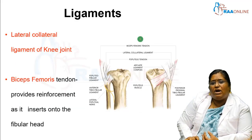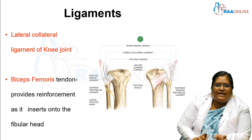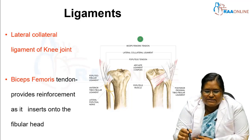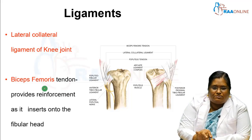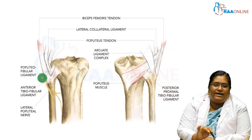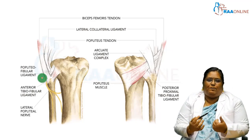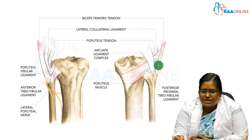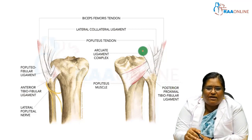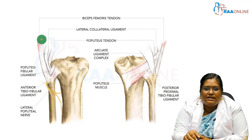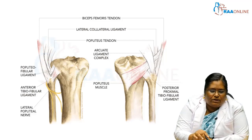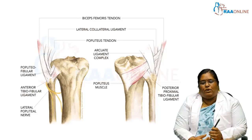Apart from these three ligaments, we also have the lateral collateral ligament of the knee joint and the biceps femoris tendon. The biceps femoris tendon provides reinforcement as it gets inserted into the fibular head, and it also gives stability to the proximal tibiofibular joint. The lateral collateral ligament of the knee joint and the biceps femoris tendon together provide additional stability to the proximal tibiofibular joint.